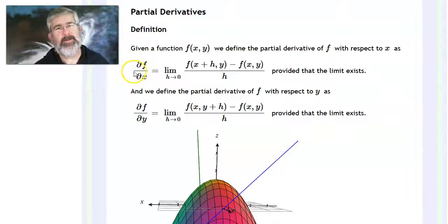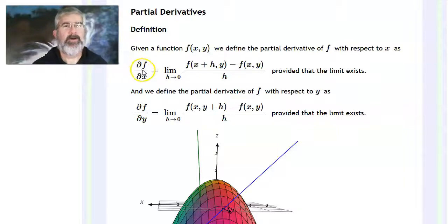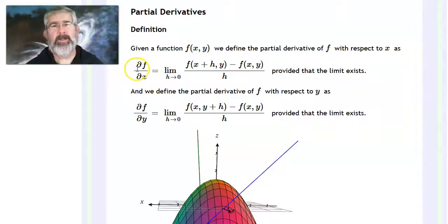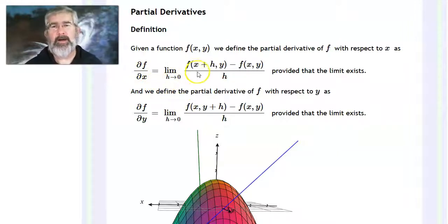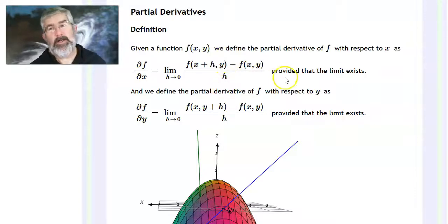In LaTeX you would use backslash partial. The partial of f with respect to x is the limit as h goes to 0 of f(x+h, y) minus f(x, y), all over h, provided the limit exists.